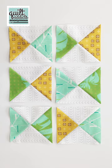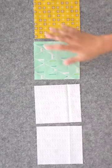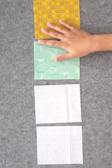Here's how to make quarter square triangles or hourglass units from squares. Start with four squares that are one and a quarter inches larger than your finished quarter square triangle.